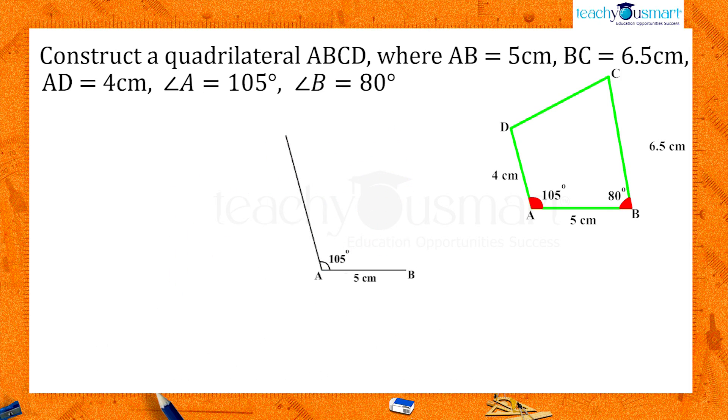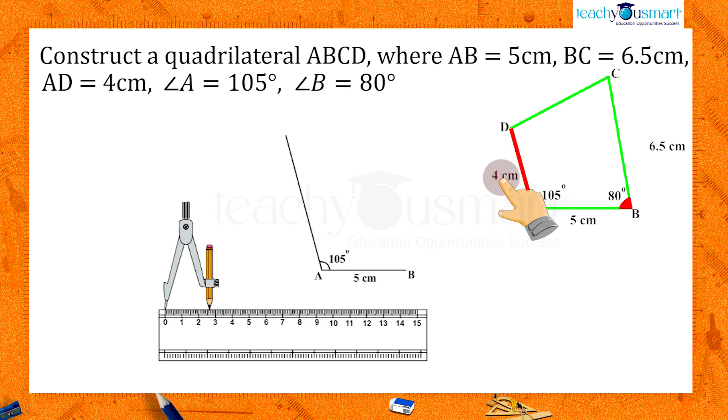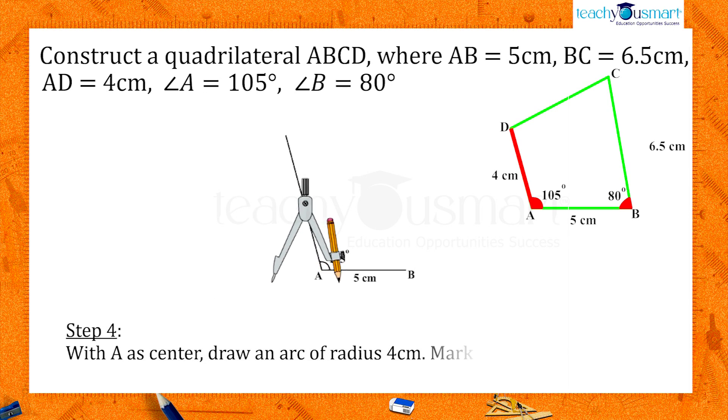From the rough sketch we can see that D is at a distance of 4 centimeters away from A. With A as center, draw an arc of radius 4 centimeters and cut this arm to get the point D.